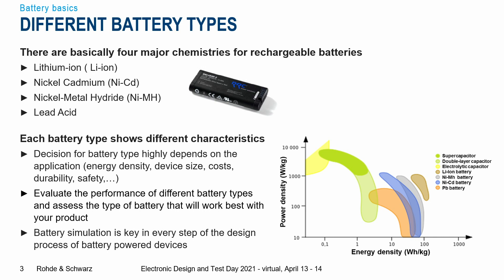All these different battery types have very different characteristics. Here in this graph, we see different battery types and their characteristics. The graph shows power density over energy density, and we can already see that different materials show very different behaviors.